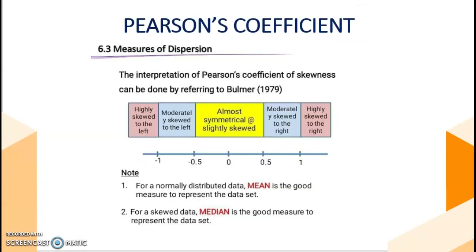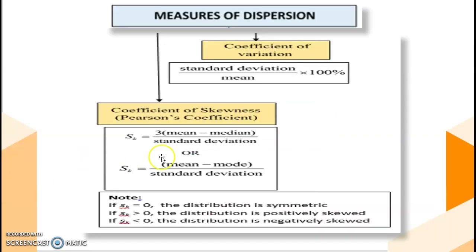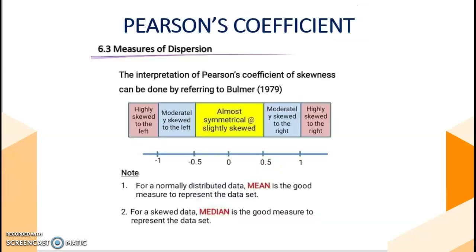Pearson coefficient. We have two formulas here. Either we use mean, median, and standard deviation; or we use mean, mode, and standard deviation. The interpretation of Pearson coefficient of skewedness would be as follows.